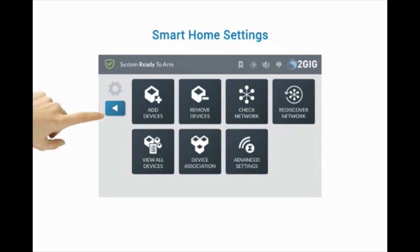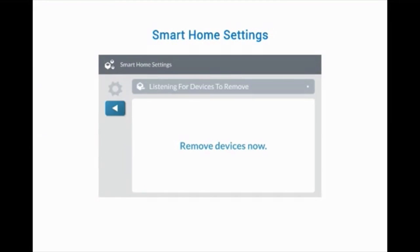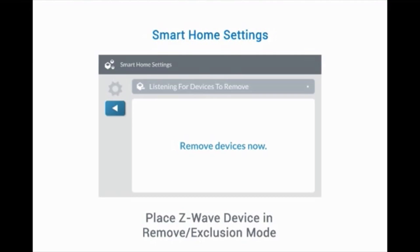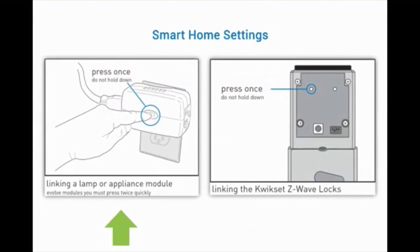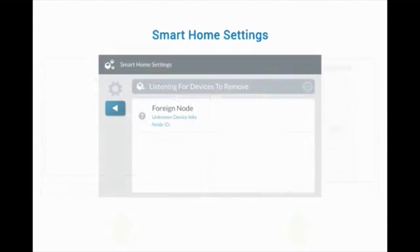Next, press Remove Devices. Now that the panel is in Remove mode, also called Exclusion, put the Z-Wave device in Remove or Exclusion mode. Z-Wave devices are removed in various ways. For example, a lamp module requires a double tap, while a quick set door lock requires a single press of the Learn Remove button. The panel will display the Z-Wave device has been removed. Press the left arrow to exit.